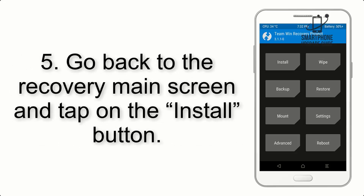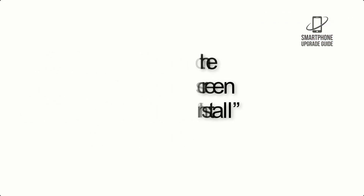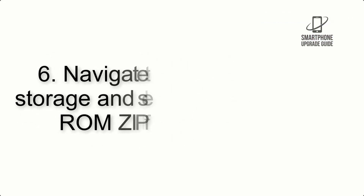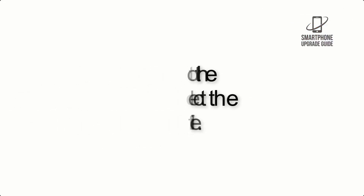Step 5: Go back to the Recovery main screen and tap on the Install button. Step 6: Navigate to the Storage and select the ROM ZIP file.